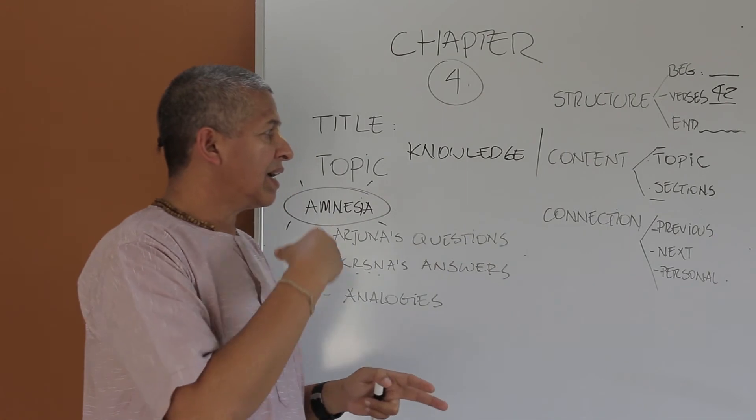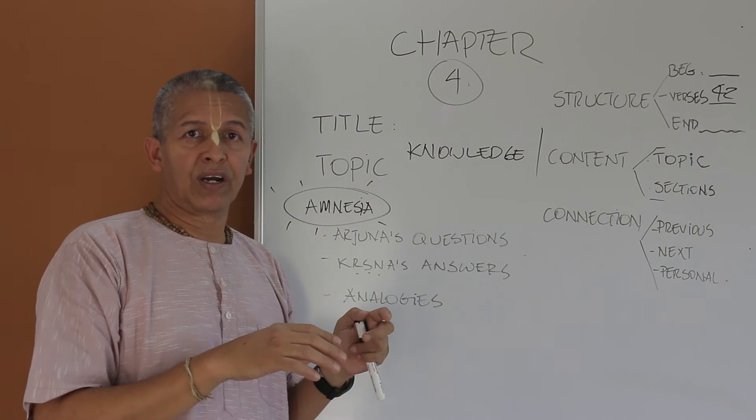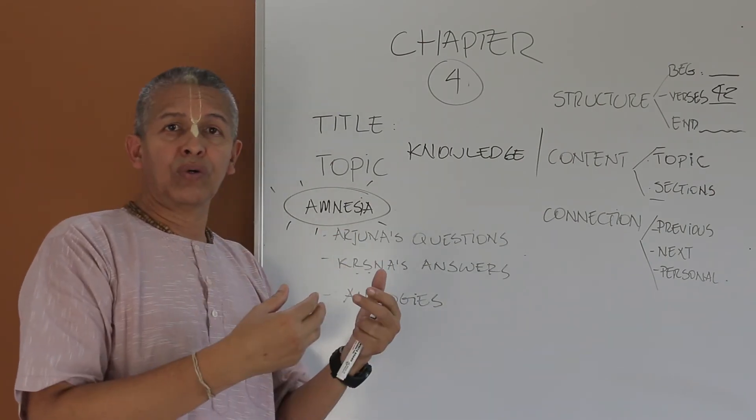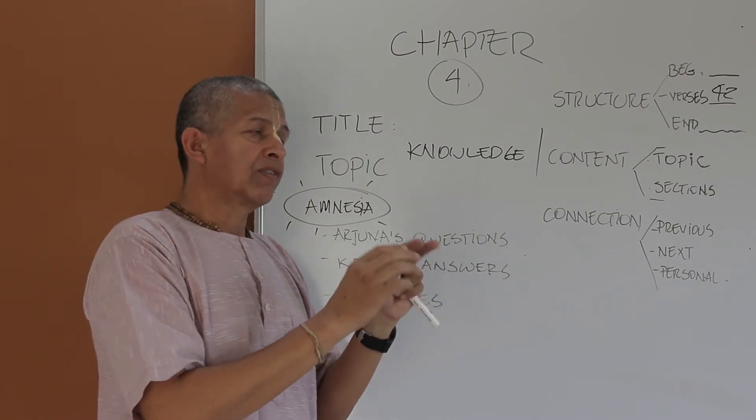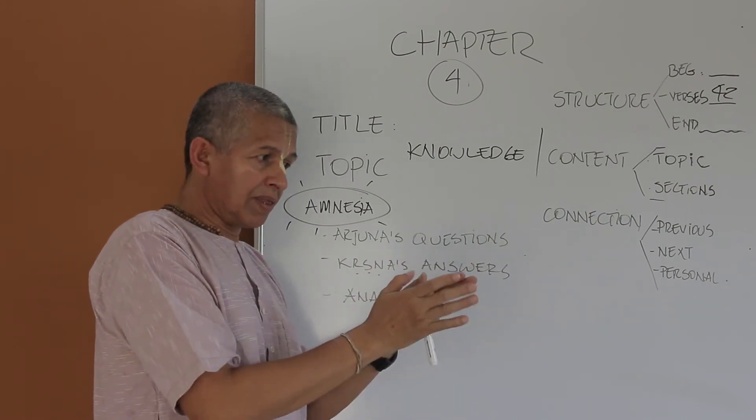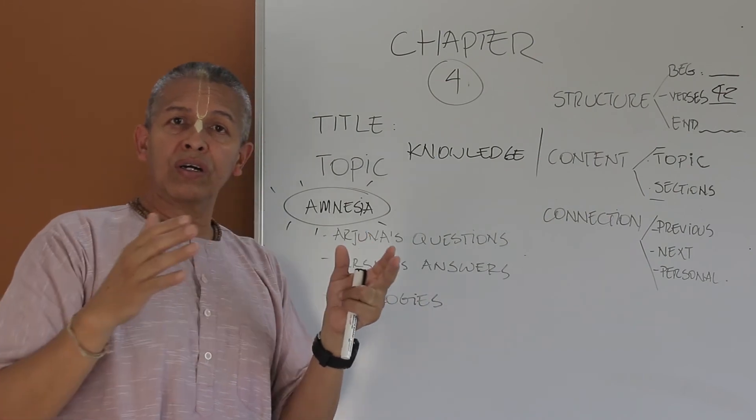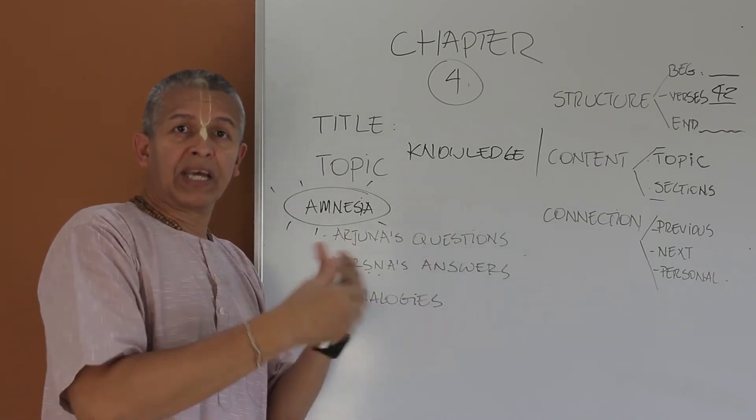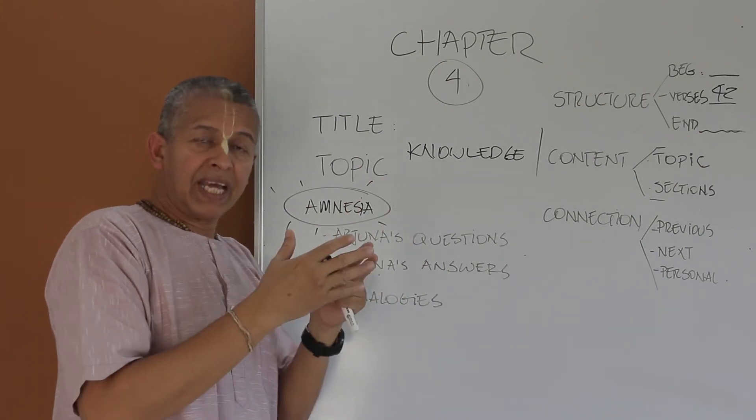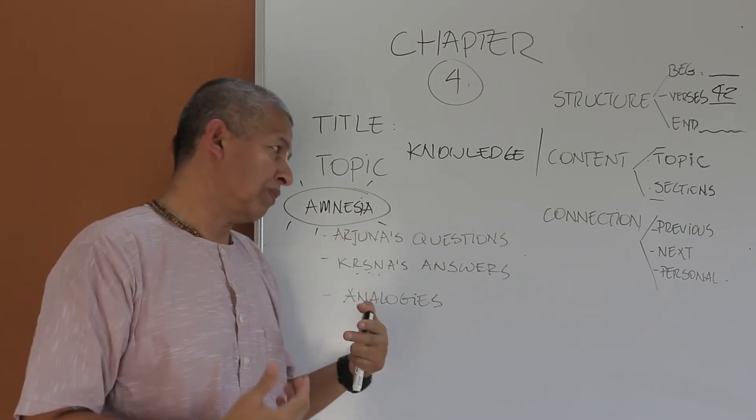The connection with the next chapter is very, very interesting. Why? Because Krishna, as I said earlier, has a particular type of style in how to perform this work. So he has a style in teaching. He mentions sometimes something in a very brief way and then he dedicates long sections or long chapters to explain that particular topic. For example, he's mentioning briefly about his nature. But then he, in great detail, in further chapters, he will explain about his position as the Supreme Lord.